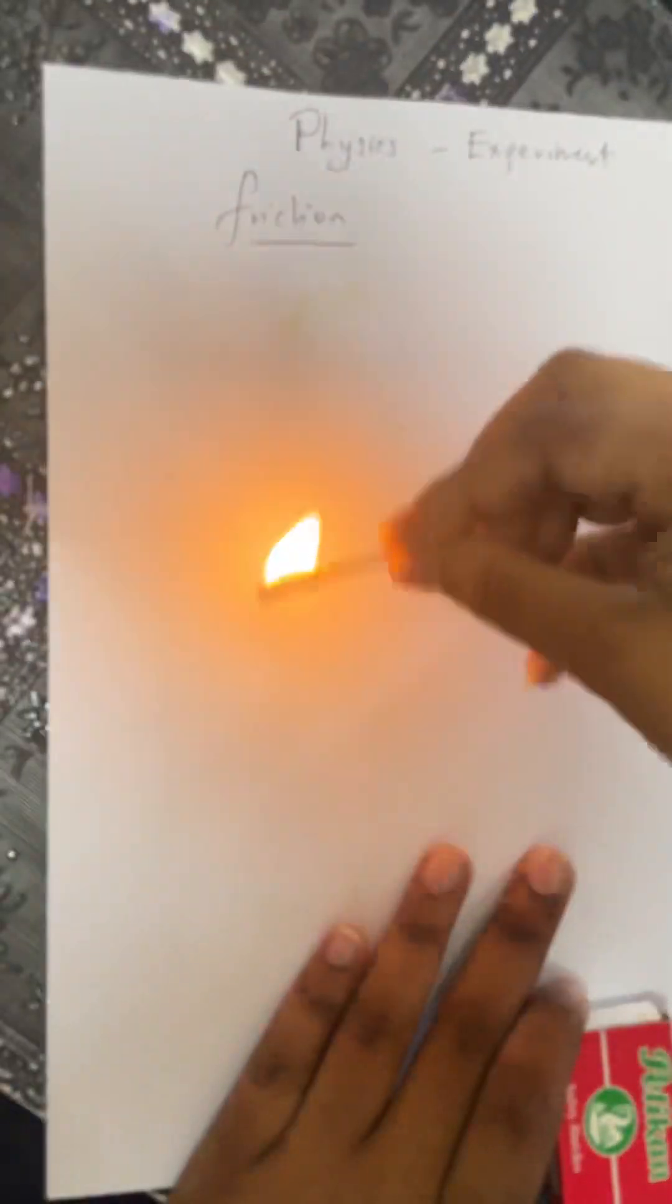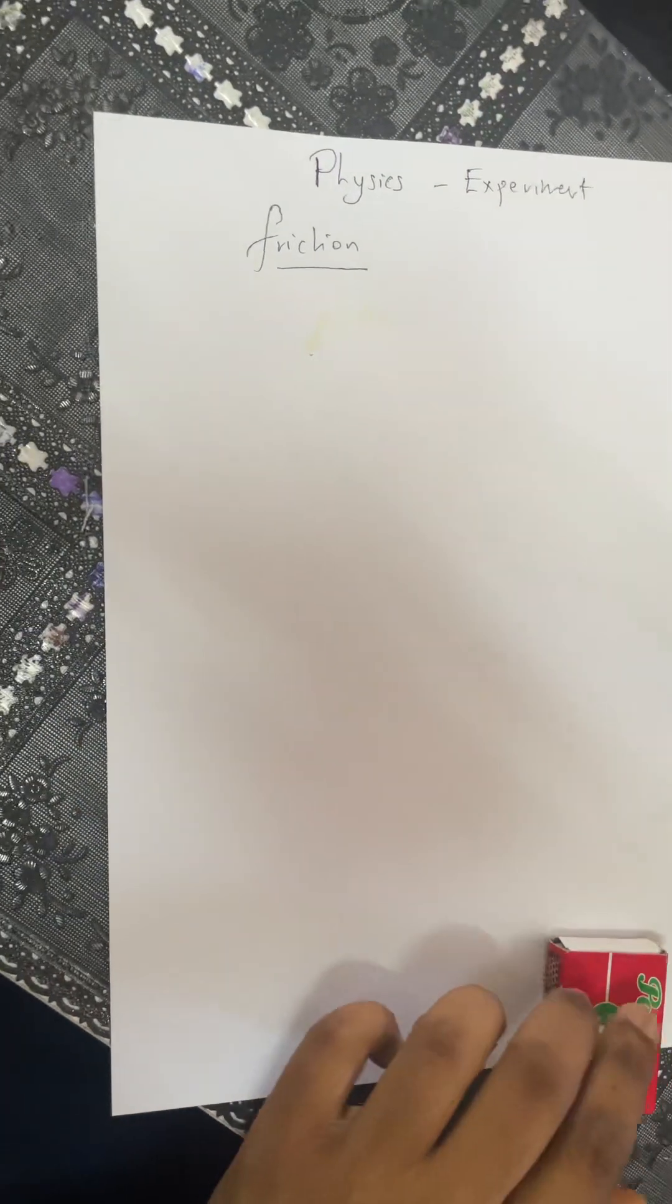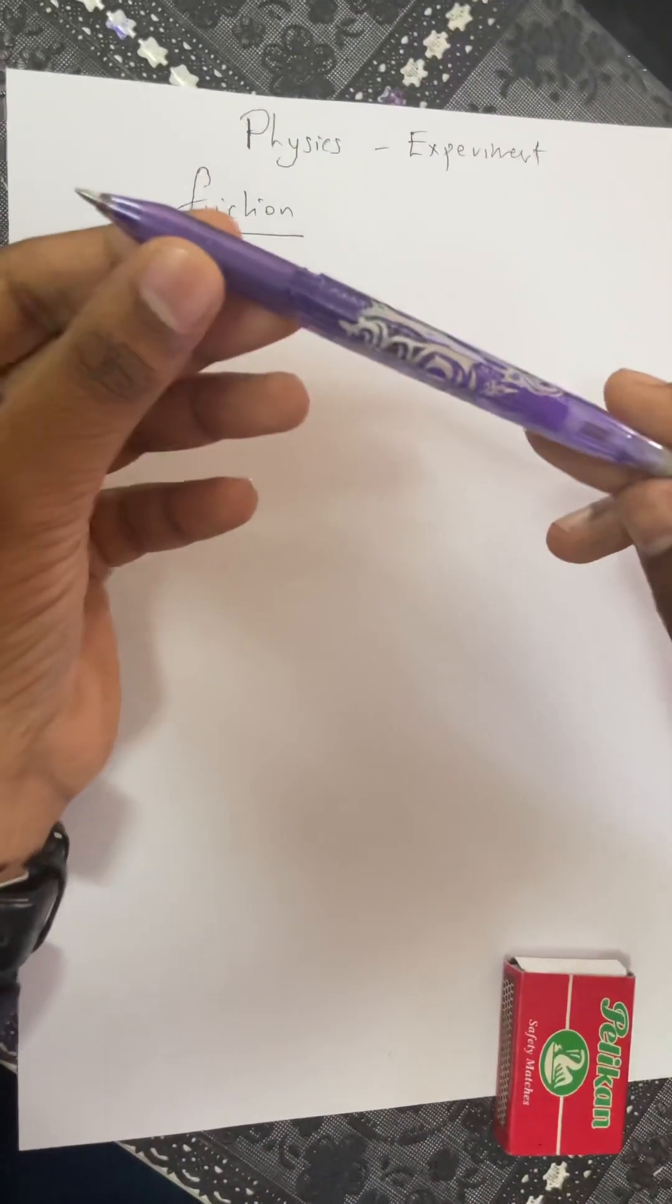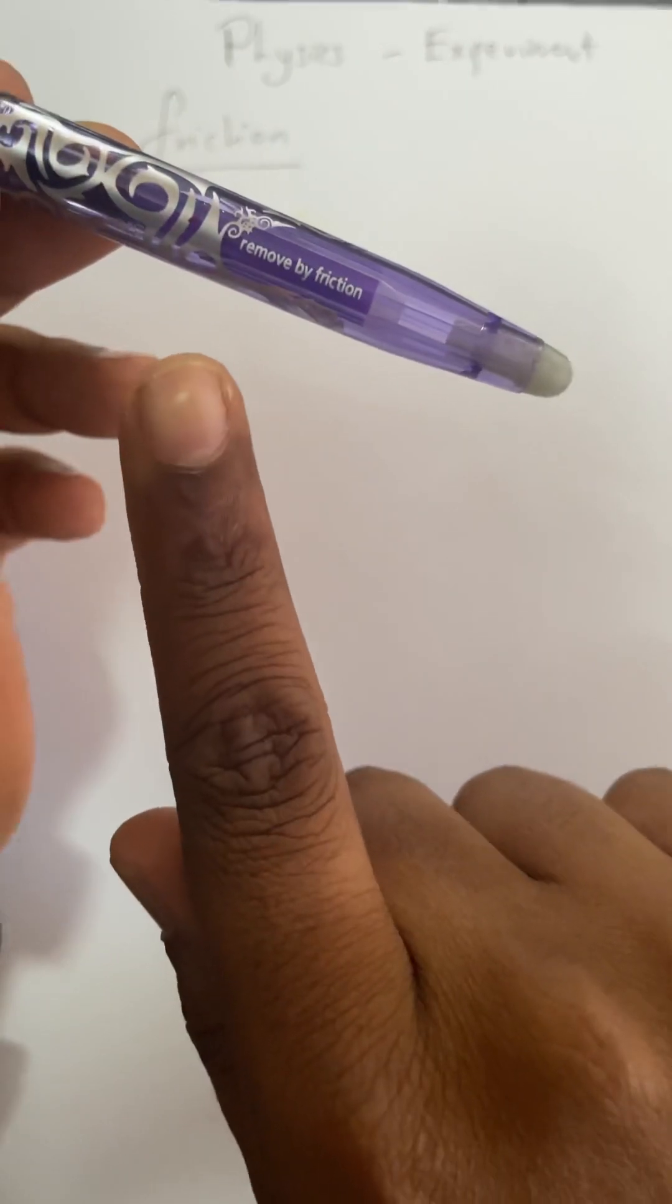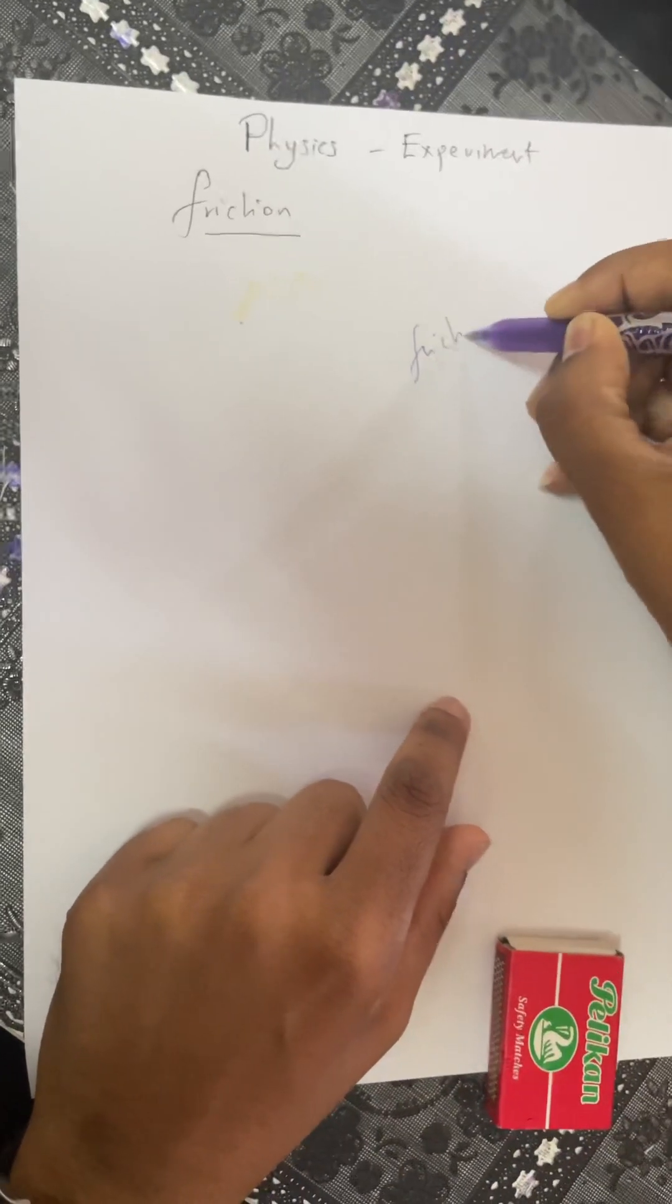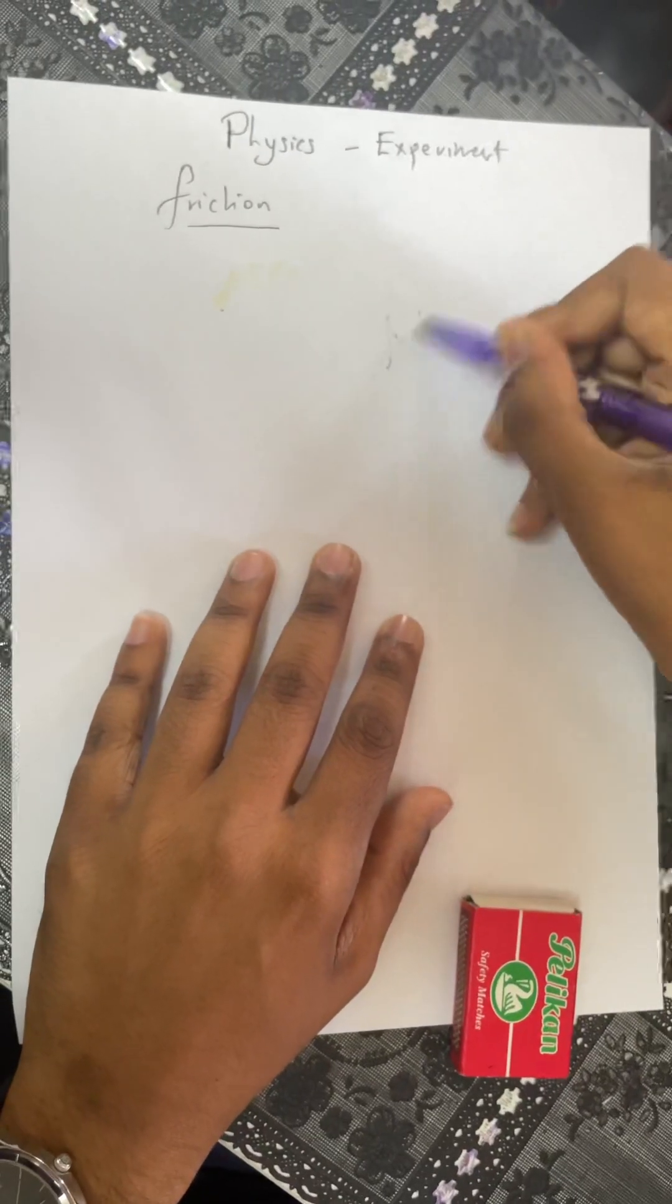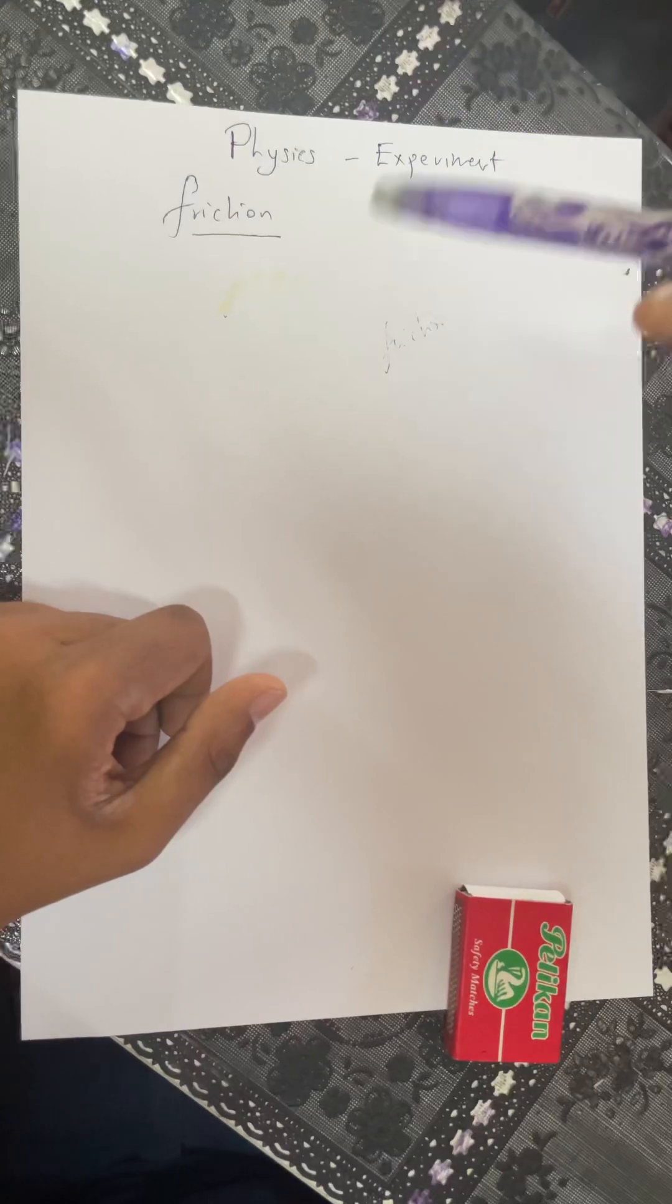As you can see, the friction has been erased from this paper. Why is this? This is an erasable pen whereby it is written 'remove by friction.' When I write friction here and use the eraser, it will erase the ink because this is an erasable pen.